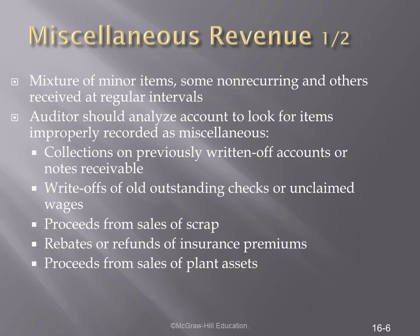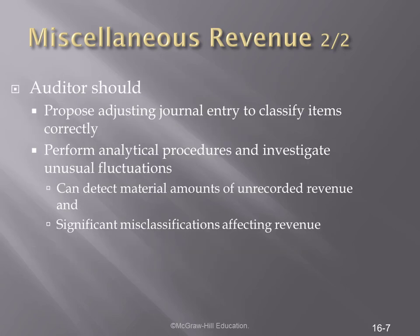Miscellaneous revenue is the first account we want to talk about. This is a mixture of items such as non-reoccurring items and others received at regular intervals — examples include sales of scrap, rebates or refunds from insurance policies, and proceeds from the sale of plant equipment. One thing we're looking for is classification, as some items in miscellaneous revenue may in fact be a reduction in expenses. Performing analytical procedures will help us investigate unusual fluctuations, including material amounts of unreported revenue and significant misclassifications affecting revenue.